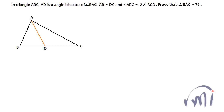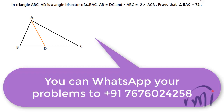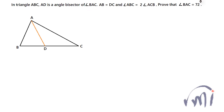Here we have a problem given as homework for a ninth grader, and they were asked to solve it using congruencies. The problem statement is: in a triangle ABC, AD is the angle bisector of angle BAC. That means this angle is A/2 and this angle is also equal to A/2.